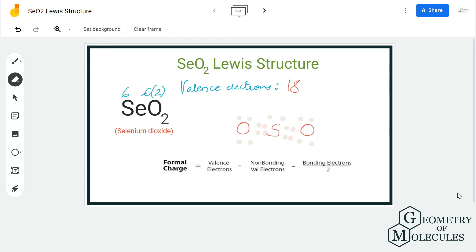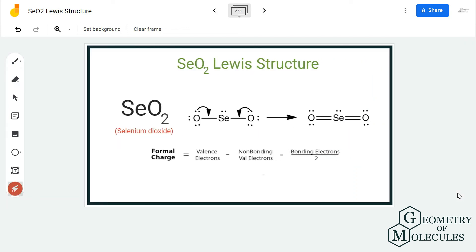What we are going to do is shift another pair of electrons in the center and then calculate the charges. Forming a double bond on both sides, you will get a formal charge of zero on all the atoms. Hence this is the Lewis structure of selenium dioxide.